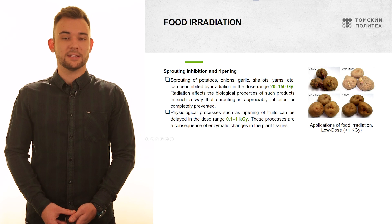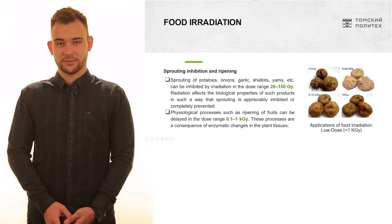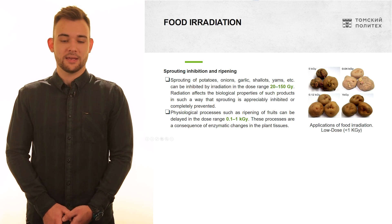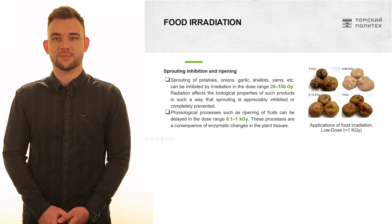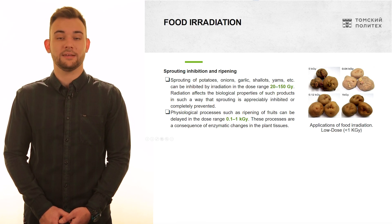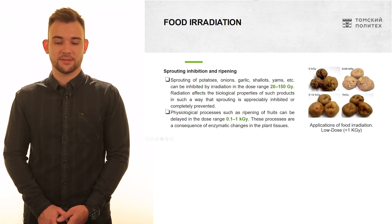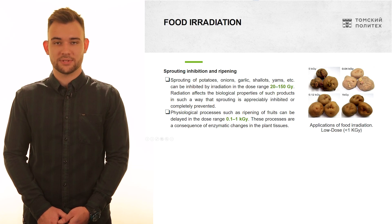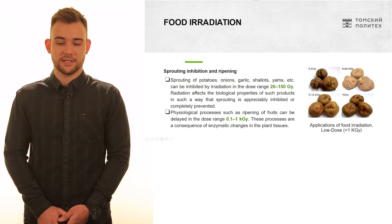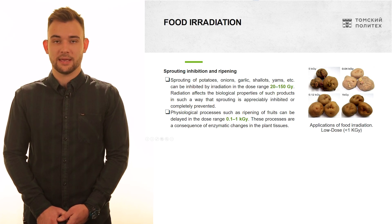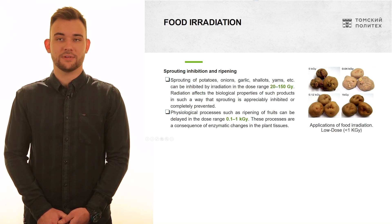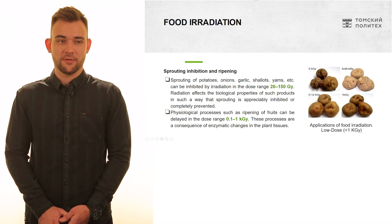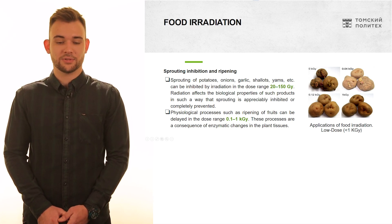Irradiation is also done for sprouting inhibition and ripening control, and vegetables and fruits may be subjected to it. Vegetables such as potatoes, onion, and garlic sprout, but if subjected to a dose range of about 20 to 150 grays, the sprouting process is either inhibited or completely stops. As you can see in the picture, the potato irradiated with one kilogram gray is not sprouted. For fruits, irradiation is done to delay the ripening process — for example, when you need to deliver fruits far away — using a dose of about 0.1 to 1 kilogram gray.